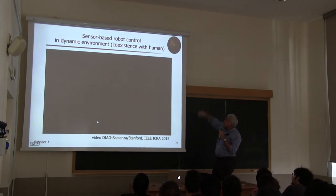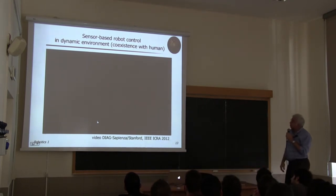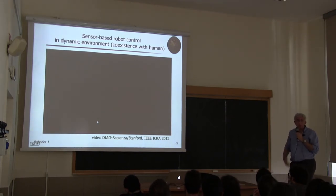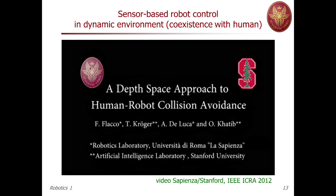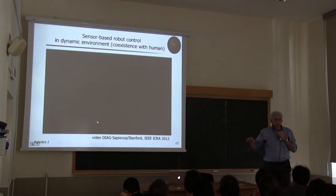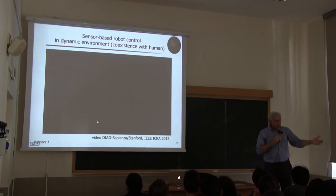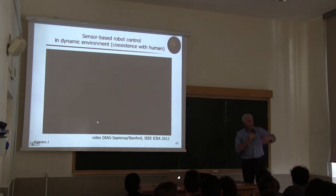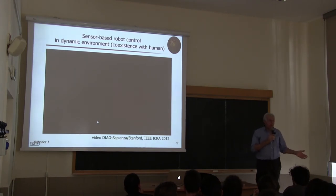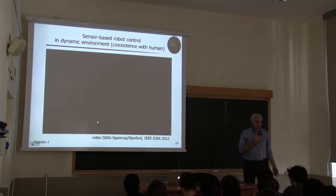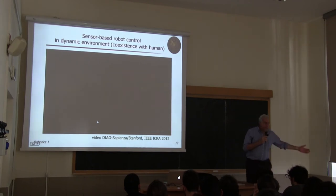We call this sensor-based robot control: controlling robot motion based on sensor information acquired in real time while the robot operates in a dynamic environment with moving objects — in particular, a moving human. This concept extends to other domains: autonomous cars in traffic also face dynamic environments with other mobile agents, and solving collision avoidance in real time was one of the main problems that had to be solved before cars like the Google car could travel autonomously.